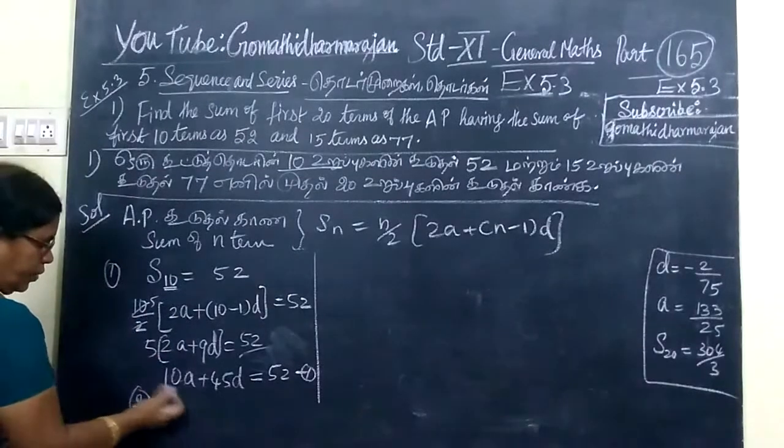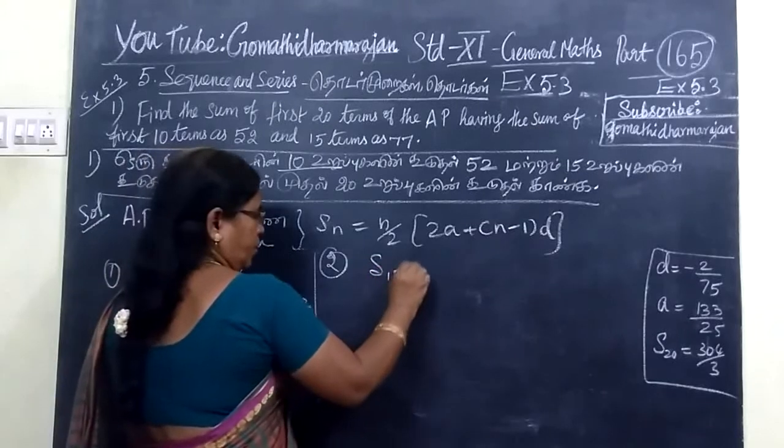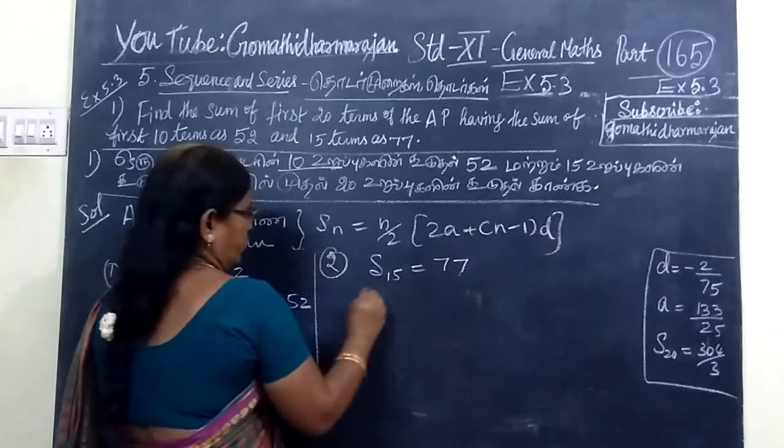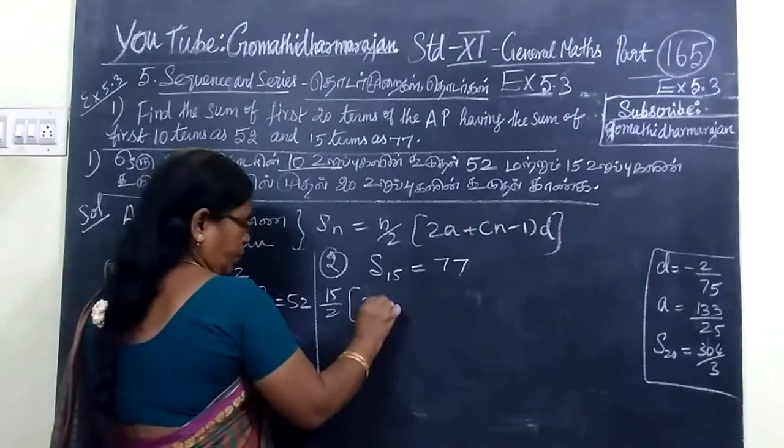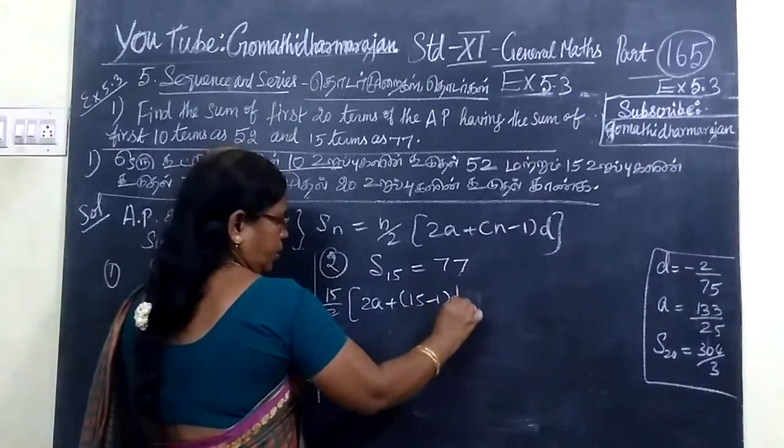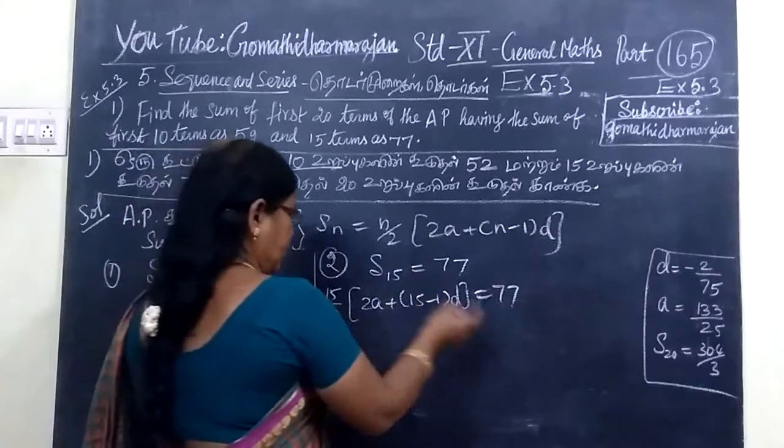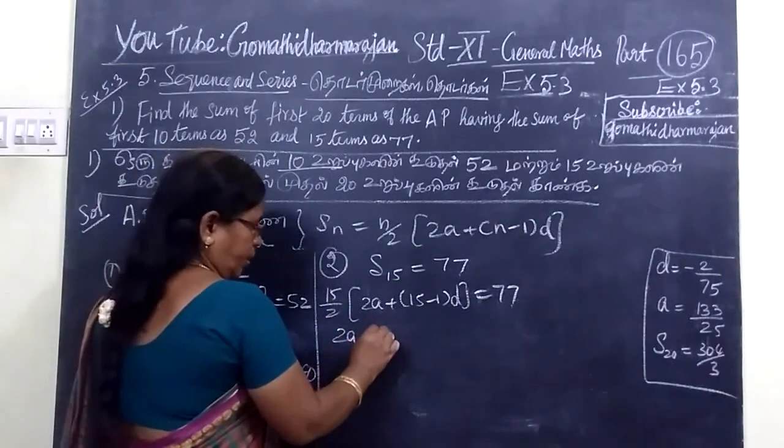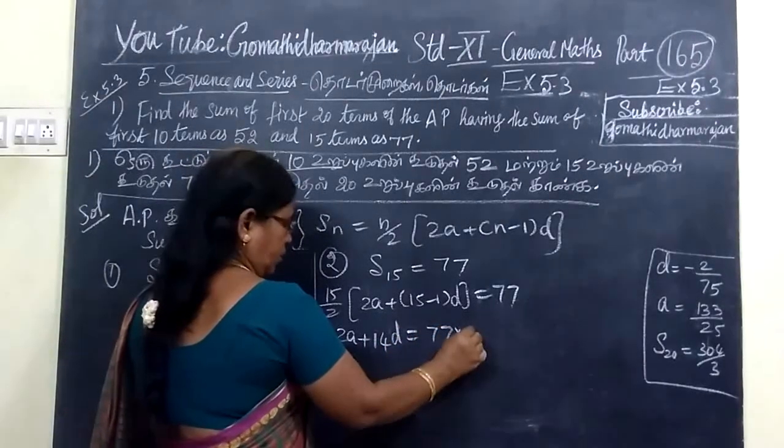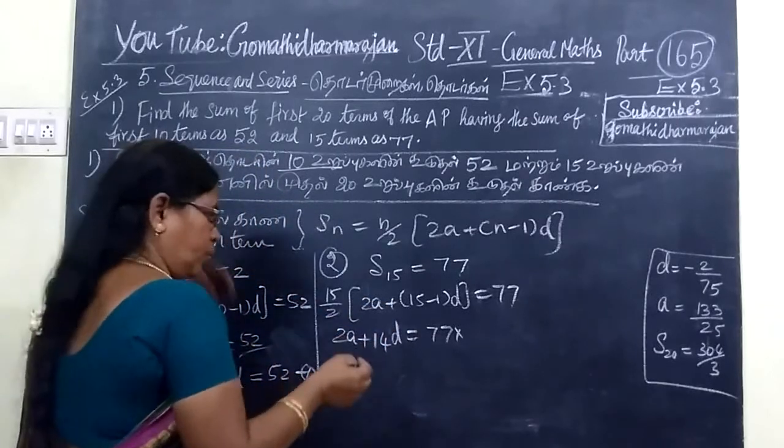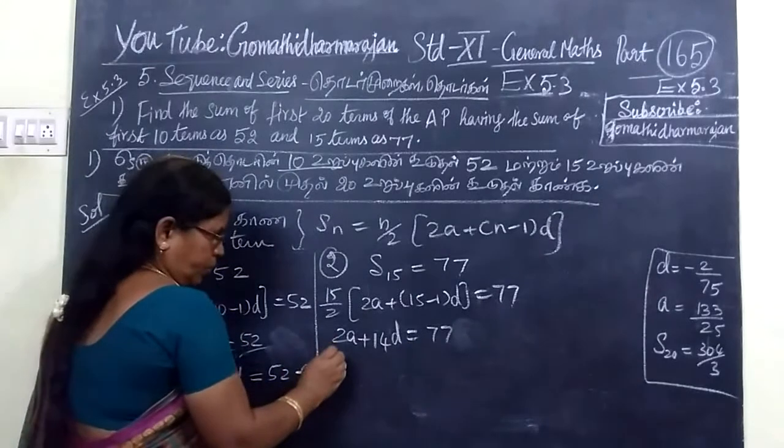S15 equal to 77. So, N by 2 bracket 2A plus N minus 1 into D equal to 77. Then, after that, 15 by 2, 2A plus 14D equal to 77.